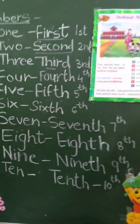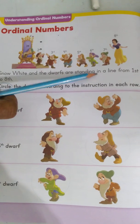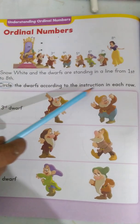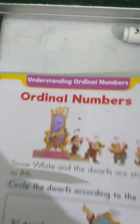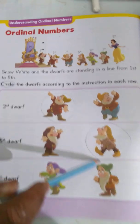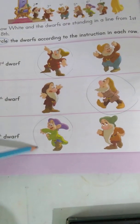Now let us do exercises from the book. Snow White and the dwarfs are standing in a line from first to eighth. We have to circle the dwarfs according to the instruction in each row. We have to circle the third dwarf — this one is the third dwarf. And here, the fifth dwarf — this is the fifth dwarf. And here is the sixth dwarf — we will circle the sixth dwarf.